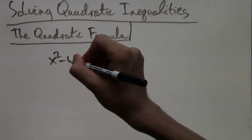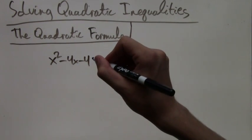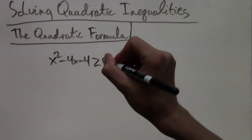So let's just do an example. Let's say we have x squared minus 4x minus 4 is greater than or equal to 0.